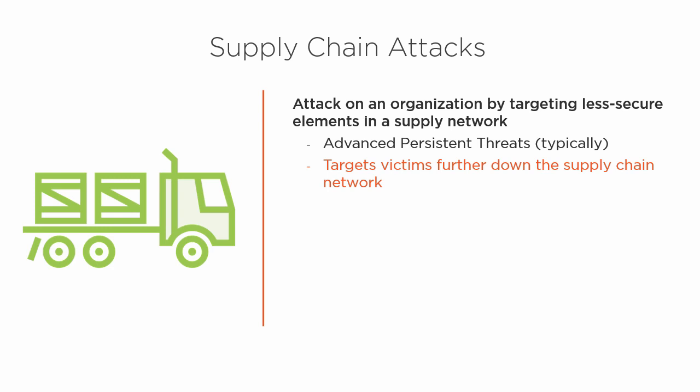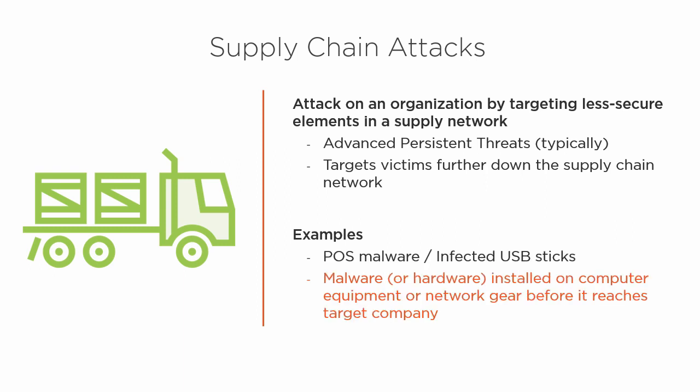As those pieces of the product filter their way down to the customer or the company we want to gain access to, they're already using tainted equipment, parts, or software. An example might be point of sale malware — we can infect point of sale terminals. Another example would be malware or hardware installed on computer equipment or network gear before it reaches the target company.